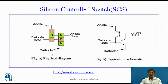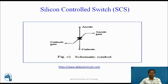This is the physical diagram of SCS, and figure B shows the equivalent schematic of Silicon Controlled Switch having four terminals: anode, cathode, cathode gate, and anode gate. This is the schematic symbol of SCS.